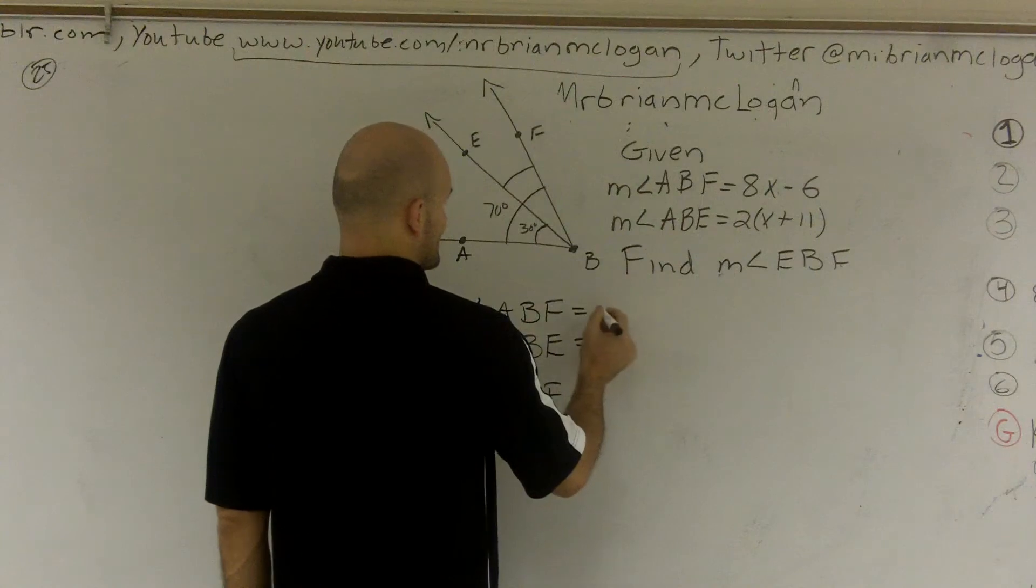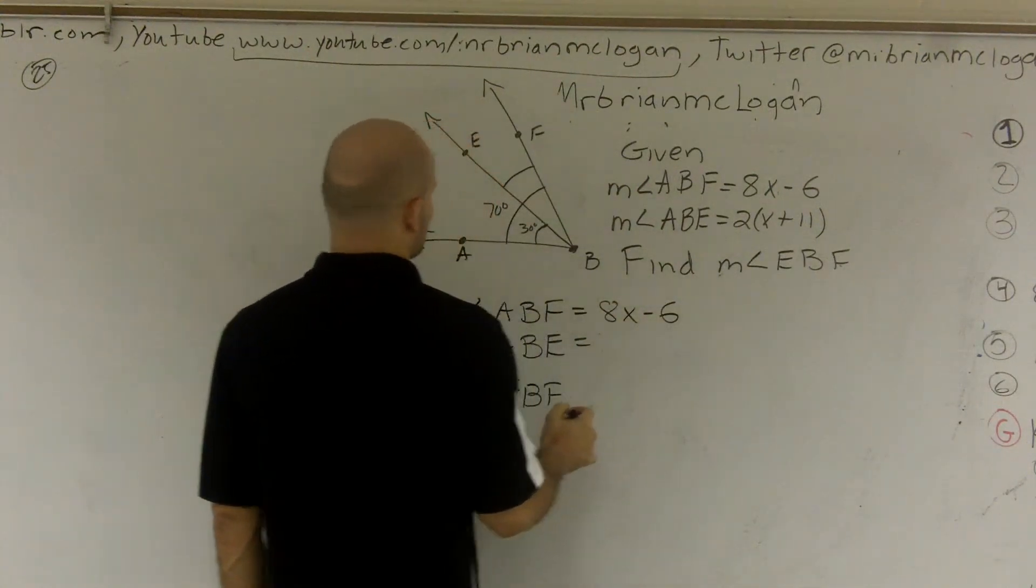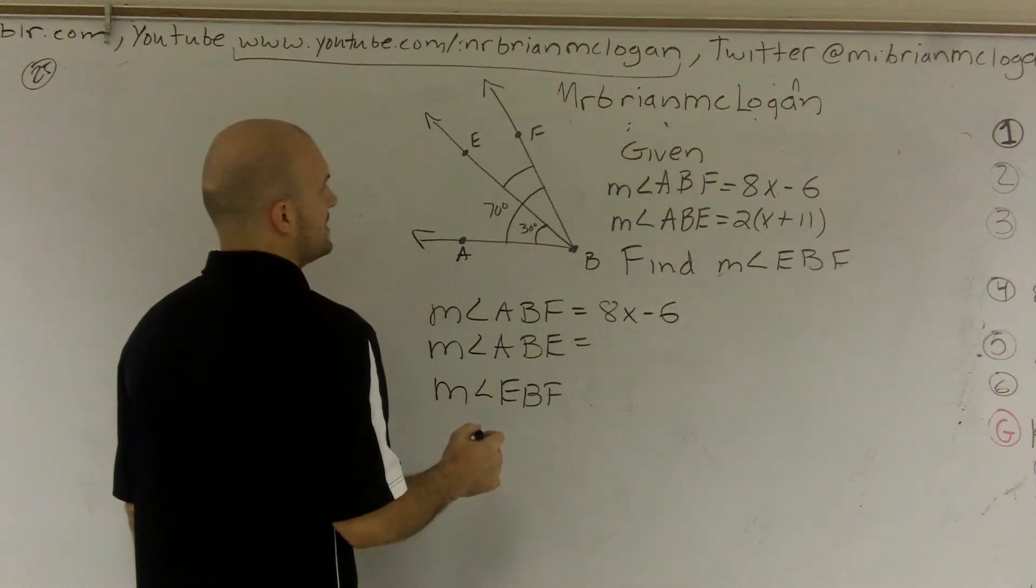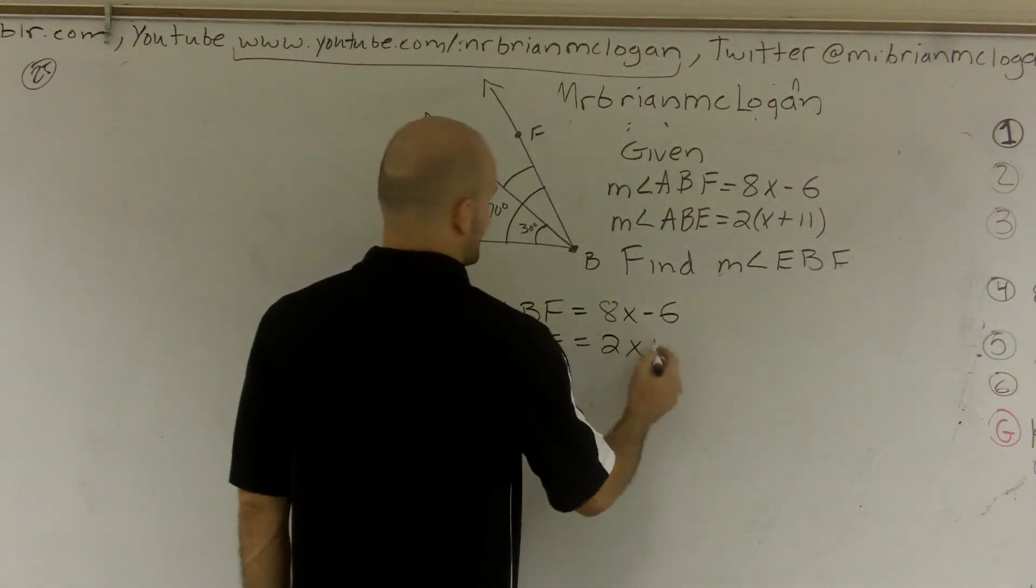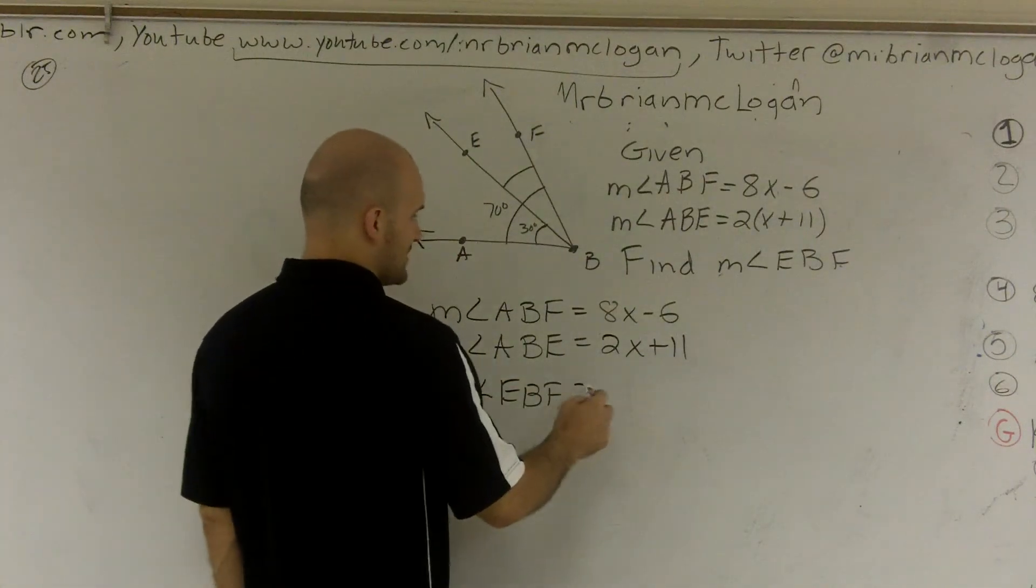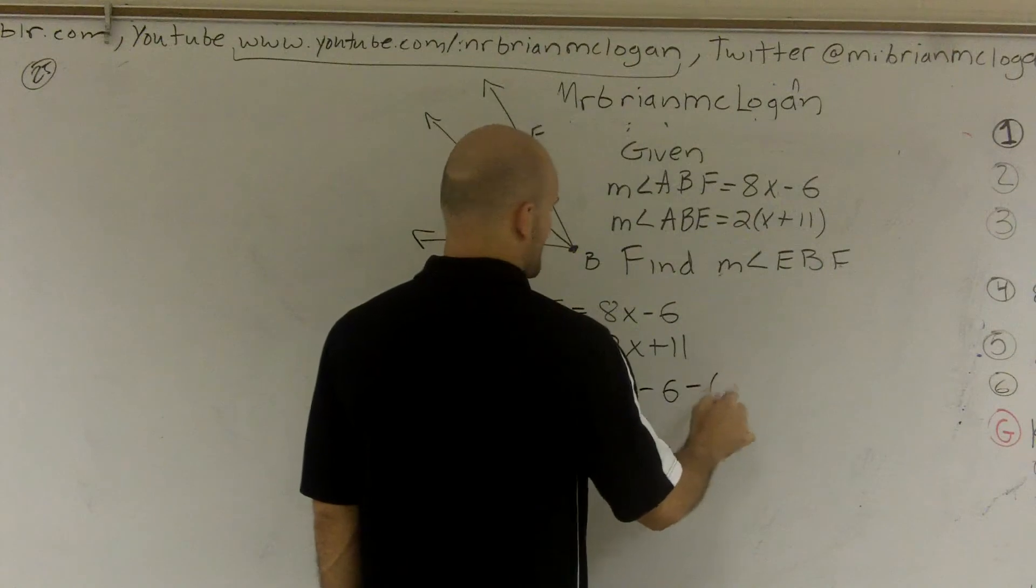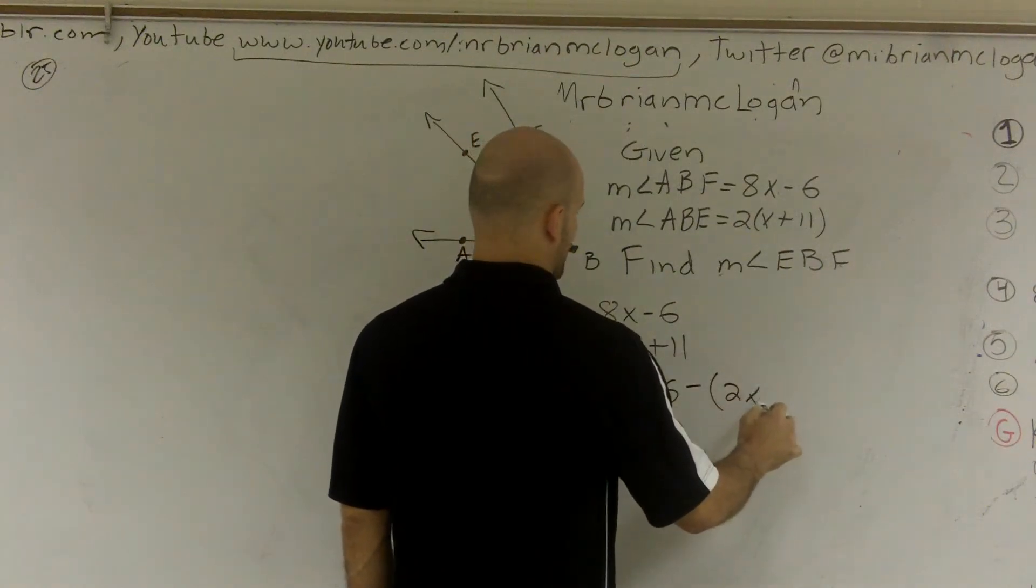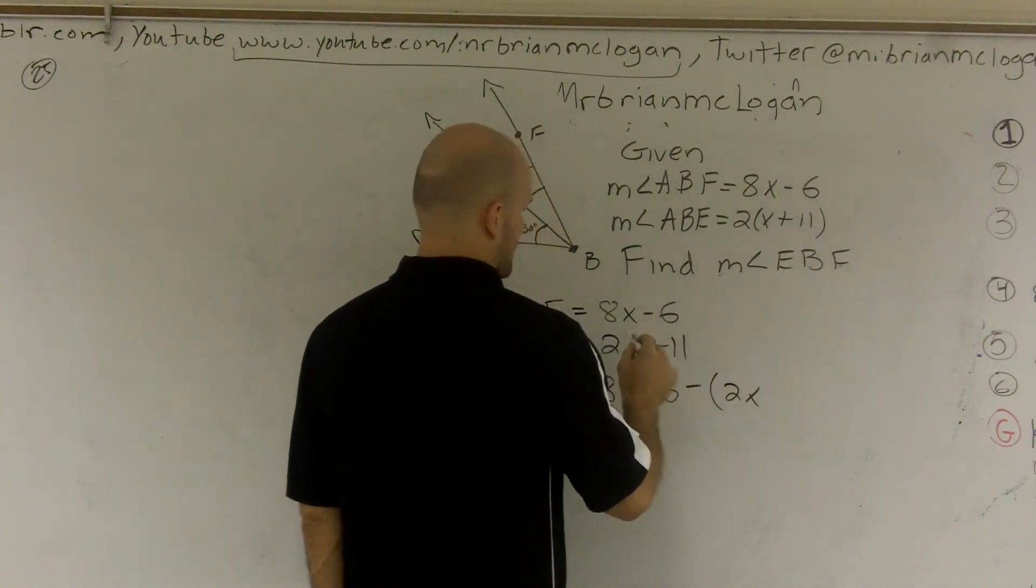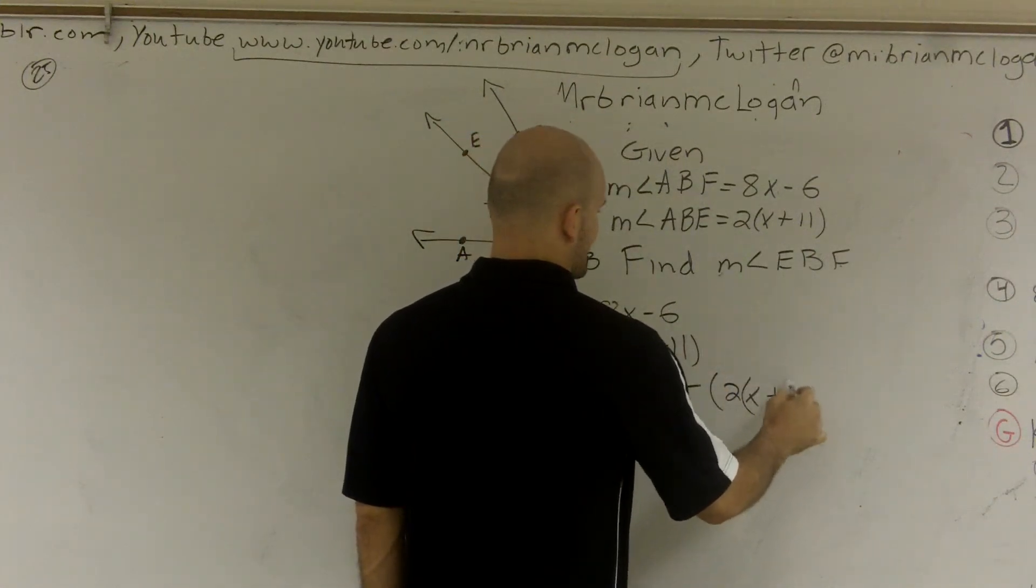So now I say that this is equal to 8X minus 6, and this is equal to ABF, or ABE is 2X plus 11. So to find the measure of EBF, I'm going to do the exact same thing. I do 8X minus 6 minus 2X—oh, sorry, forgot those things—2 times X plus 11.